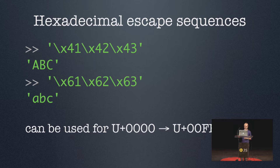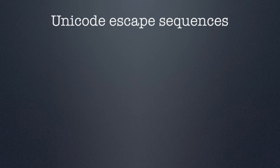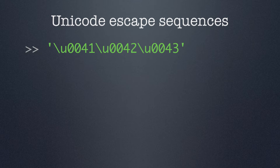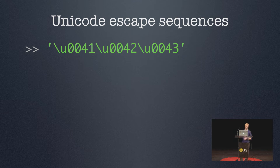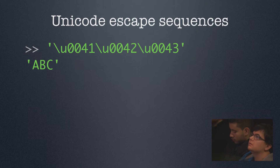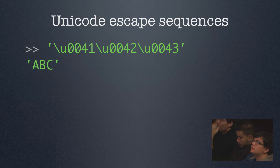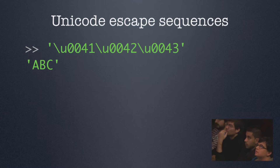Luckily, there is a different type of escape sequence we can also use, called the Unicode escape sequence. It just allows for more hexadecimal digits — instead of two, there are four. And instead of a backslash followed by an X, it's now followed by a U character — that's the only difference. So we could use the same example to escape the string ABC in all caps. But now that we have four hexadecimal digits, let's make use of that by escaping a character that has a code point consisting of four hexadecimal digits.